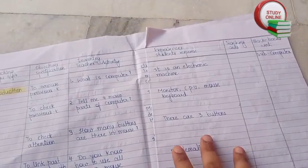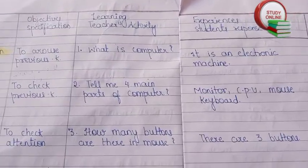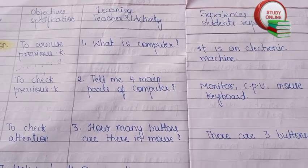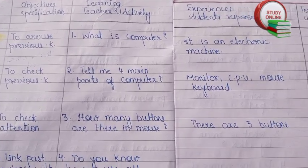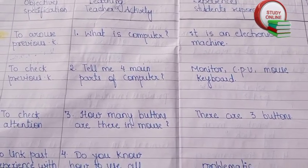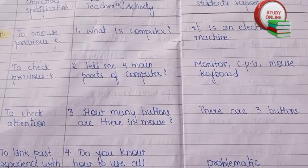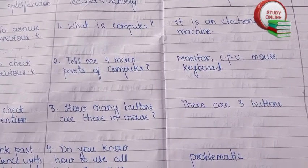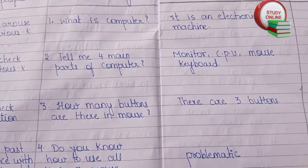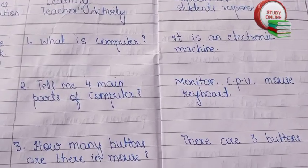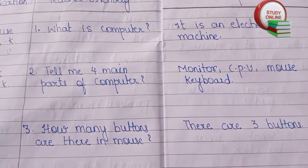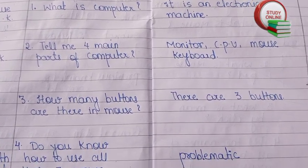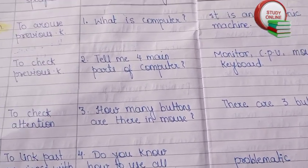For the introduction part, I have added four questions. First: what is a computer? — the student will try to answer. Second: tell me the four main parts of a computer. Third: how many buttons are there in a mouse? — the student will say there are three buttons. Fourth: do you know how to use all three of those buttons?